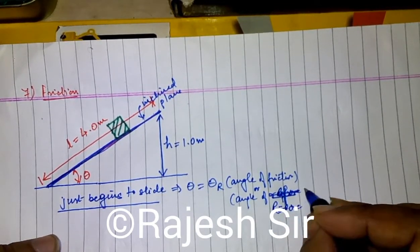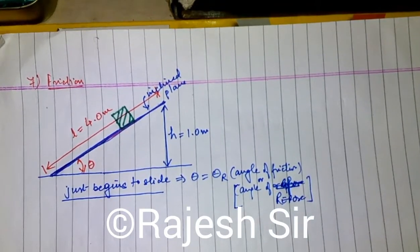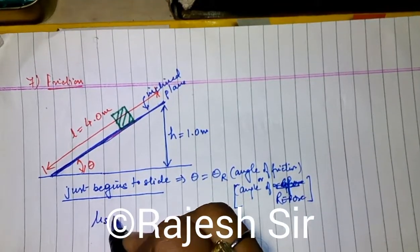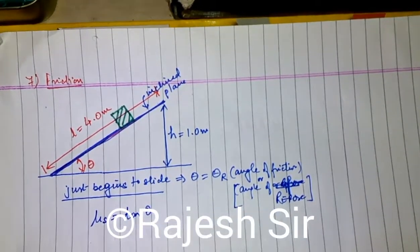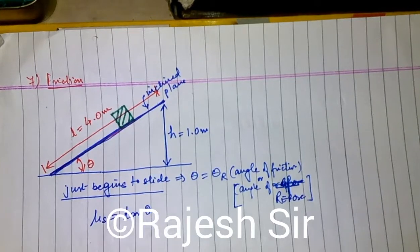Just begins to slide. Friends, in such a situation, when the block just begins to slide, the coefficient of static friction is tan of this angle, tan theta. In this case, here I have tan theta.